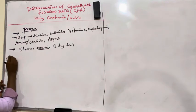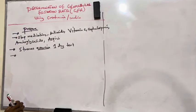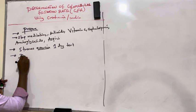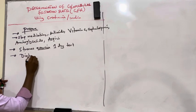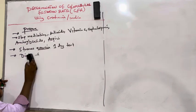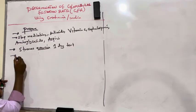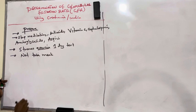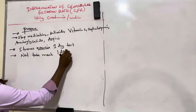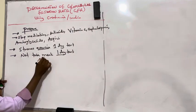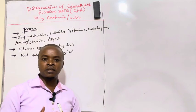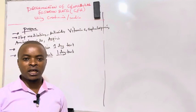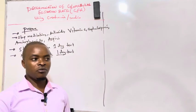GFR is also affected by diet. You tell patients that one day before the test they should not eat a diet rich in meat or rich in proteins. They should not take meat because meat contains creatinine. One day before the test, patients should be restrained from taking meat because it might cause false elevation of GFR by increasing creatinine levels and affecting the results.